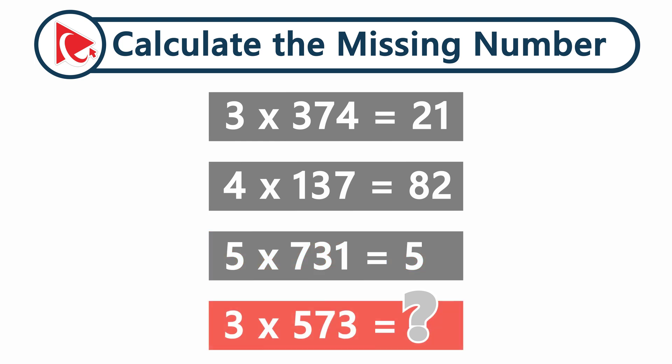And the last one, 3 multiplied by 573 equals the missing number, which you need to calculate and select out of four possible choices.